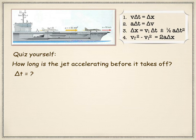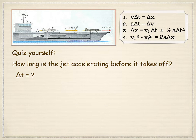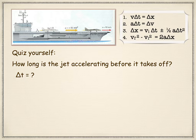In this problem, our first question is delta t — how long is the jet accelerating before takeoff? We're given initial speed, acceleration, and final speed: v-naught = 0, v-final = 93 m/s, and a = 31 m/s². We cannot use kinematic equation one because we don't have displacement and don't know the average velocity. There are two unknowns in one equation.